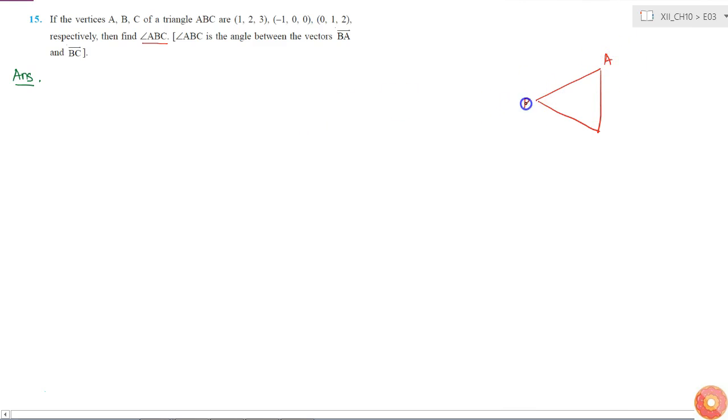We know the points A, B, C, so we know this vector which is BA, and we know this vector which is BC.